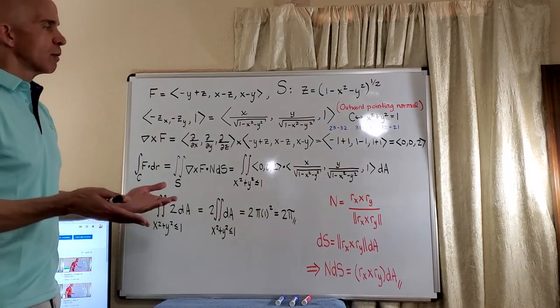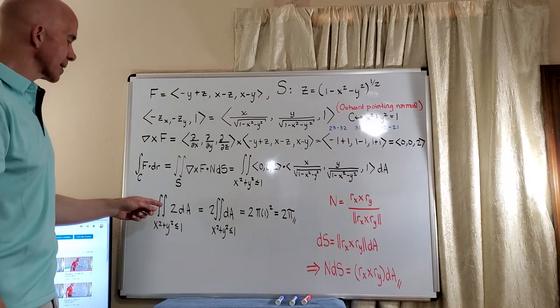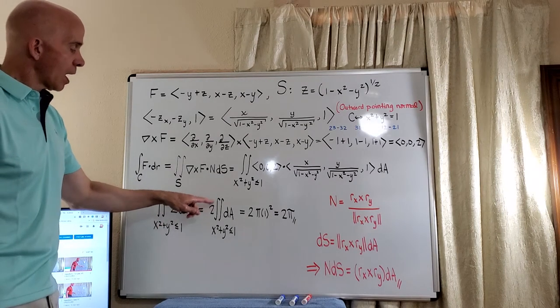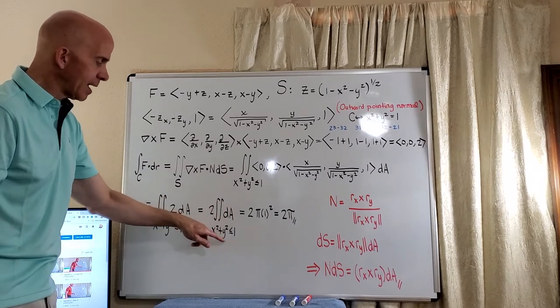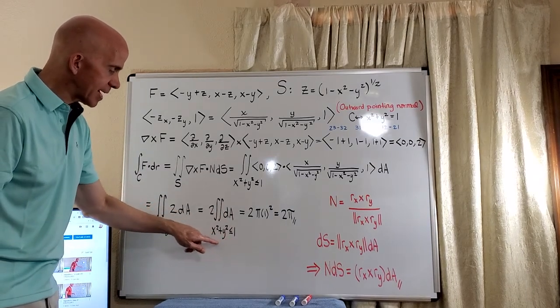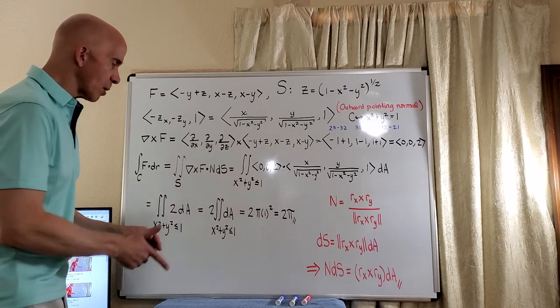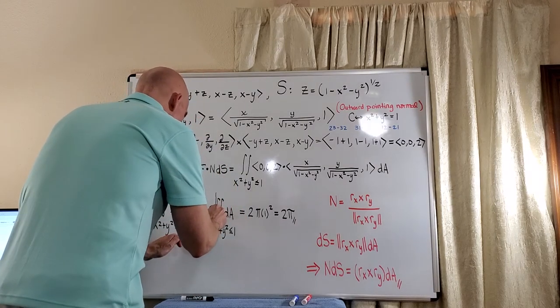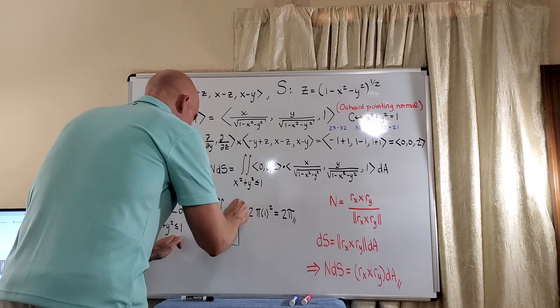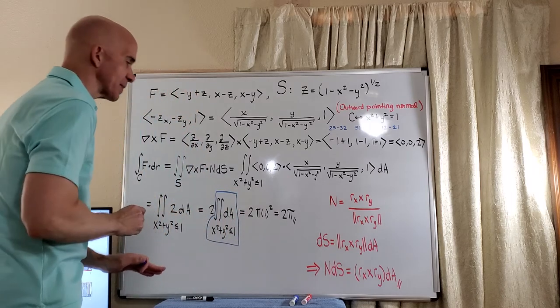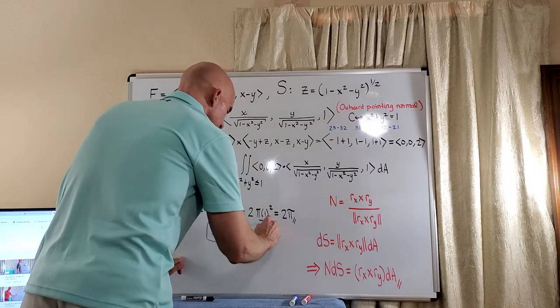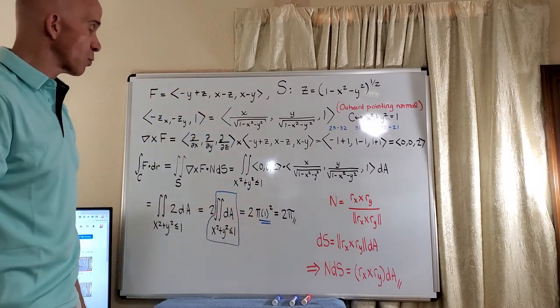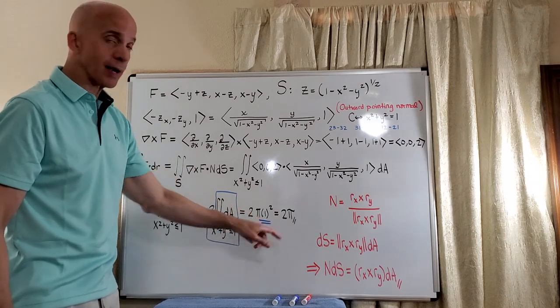Now of course, we wish all integrals would be this simple. So basically, we get the double integral when you factor the 2 of the dA computed against x squared plus y squared less than or equal to 1. Well, this object here, of course, is just the area of the unit circle right here. Again, we always want our computations to be this easy. And then of course, that's just pi r squared. And so we get pi times 1 squared or 2 times pi or 2 pi.